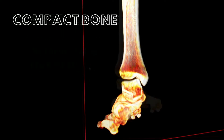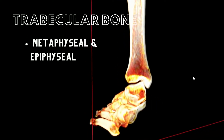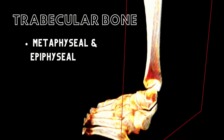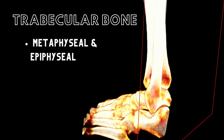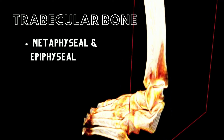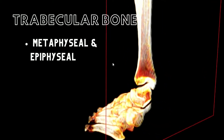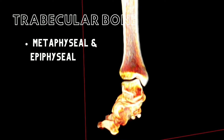The trabecular bone is typically found within the metaphyseal and epiphyseal segments of the bone. Trabecular bone is found where the stress comes from multiple directions simultaneously, which is the ends of the bone.